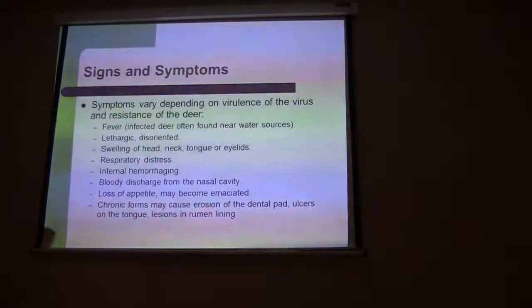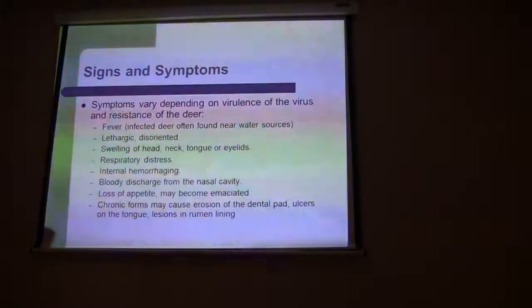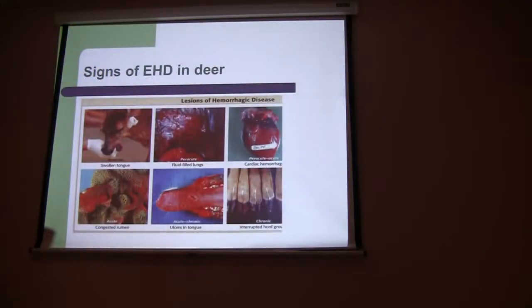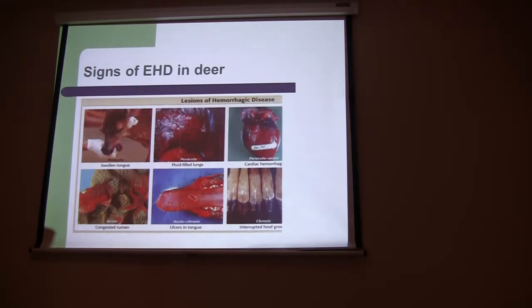Other symptoms include bloody discharge from the nasal cavity, loss of appetite. In your more chronic forms, you start to see emaciation, erosion in the dental pad, ulcers on the tongue, or lesions on the rumen. Here are some pictures of the different symptoms of EHD — there's a swollen tongue on a peracute form. On the chronic forms, you may have ulcers on the tongue and interrupted hoof growth of unequal length.